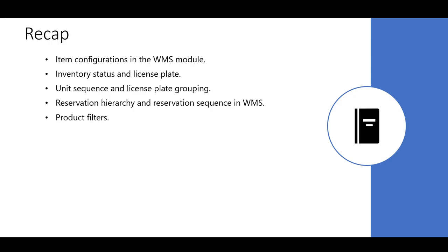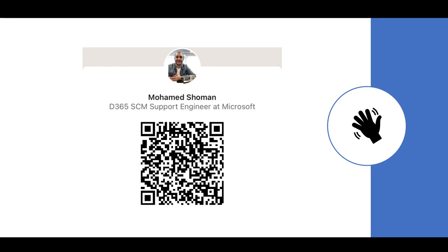Now let's recap what we discussed in this session about the required configurations of the Advanced Warehouse Management items. We started by configuring a new Storage Dimension Group enabling the Advanced Warehouse Management process, then discussed new levels available when Use Advanced Warehouse Management Process is enabled. We covered managing inventory on the Inventory Status and License Plate levels, configuring Unit Sequence and License Plate Grouping, managing the Reservation Hierarchy, and configuring Product Filters — including applying them at the item level and controlling customer and vendor orders using product filters. Thank you for watching. Please reach out if I can help. Take care and good luck.